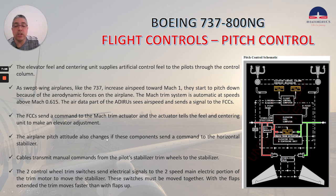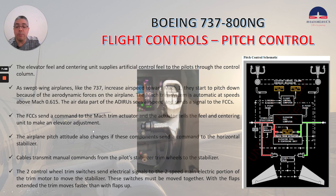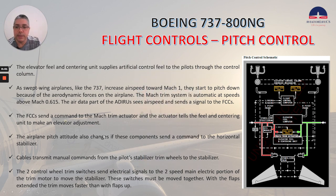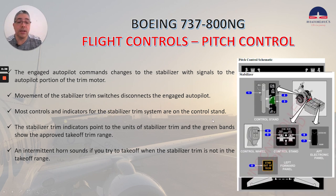The airplane pitch attitude also changes if these components send a command to the horizontal stabilizer. Cables transmit manual commands from the pilots' stabilizer trim wheels to the stabilizer. Two control wheel trim switches send electrical signals to the two-speed main electric portion of the trim motor to move the stabilizer — you can see them here. These switches must be moved together. With the flaps extended, the trim moves faster than with flaps off. The engaged autopilot commands changes to the stabilizer with signals to the autopilot portion of the trim motor. Movement of the stabilizer trim switches disconnects the engaged autopilot. Most controls and indicators of the stabilizer trim system are on the control stand, as you can see here.